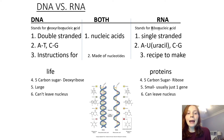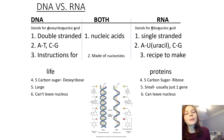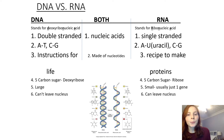DNA has four bases and RNA has four bases, but one of the bases does change. In DNA, you have adenine that binds with thymine — A binds with T — and cytosine binds with guanine, so C binds with G.